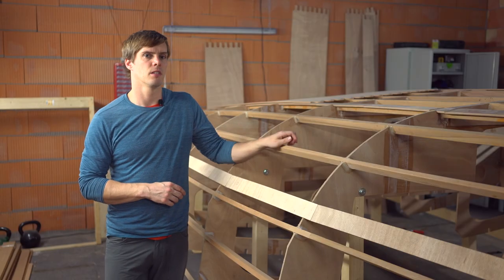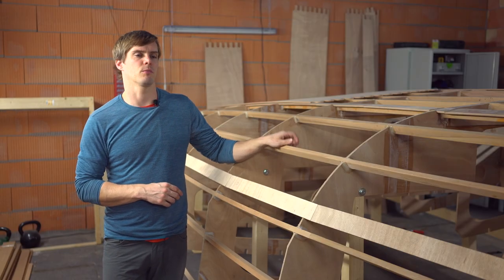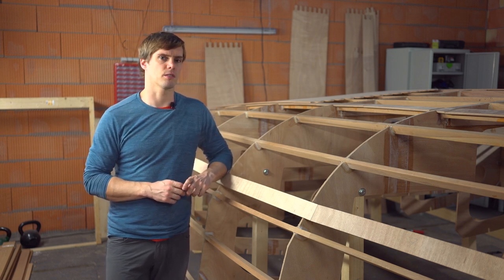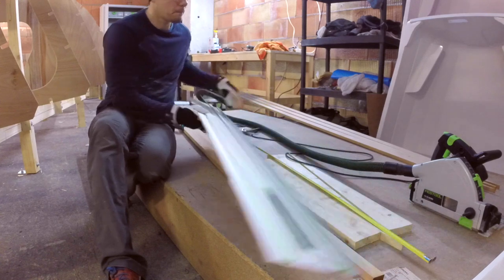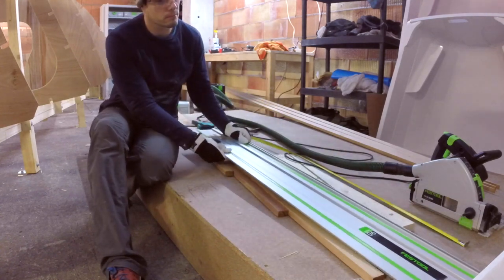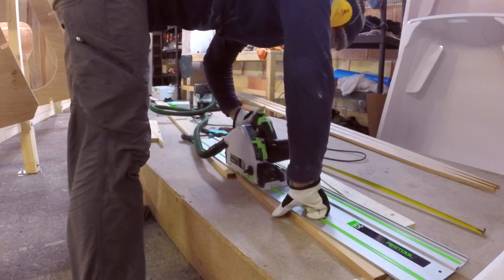Next came the stringers here. I bought sleds that were about three meters sixty long and so I had to always scarf two together to make them long enough. In order to do a scarf, you cut a 1 to 12 bevel into the sleds and then you glue together the overlapping surfaces.